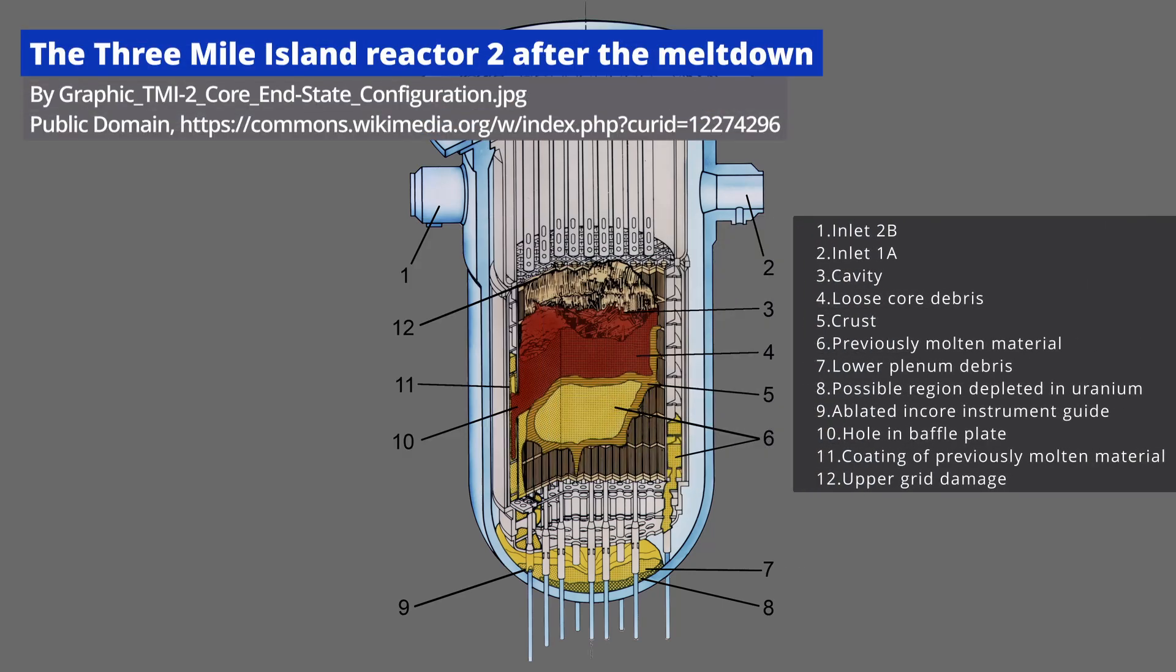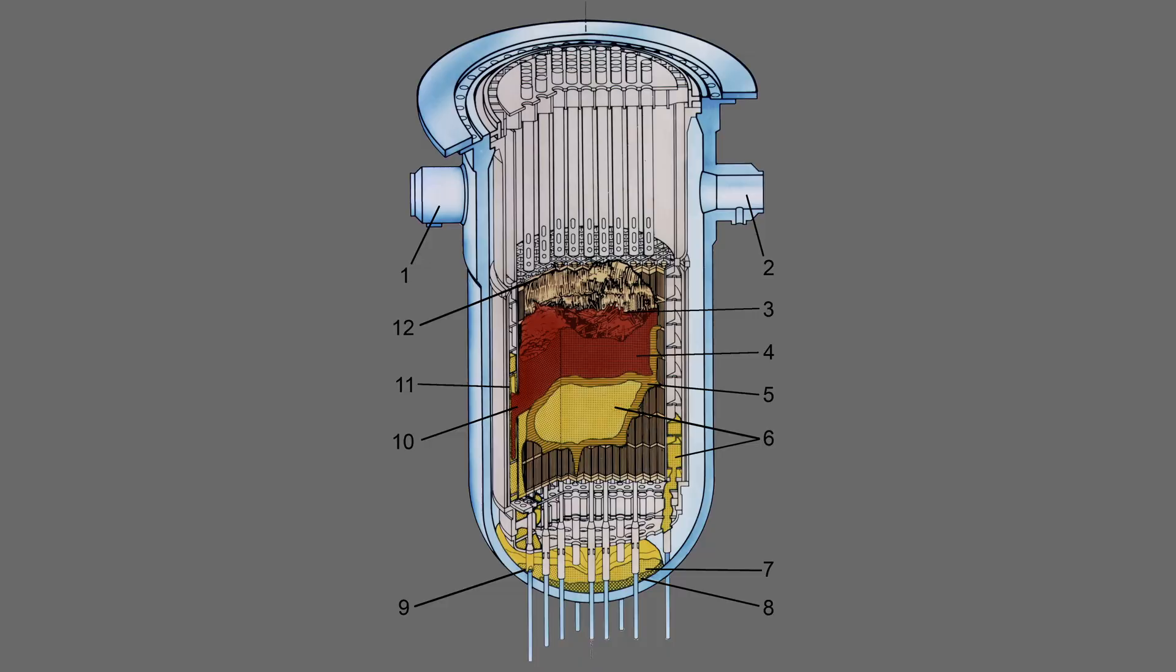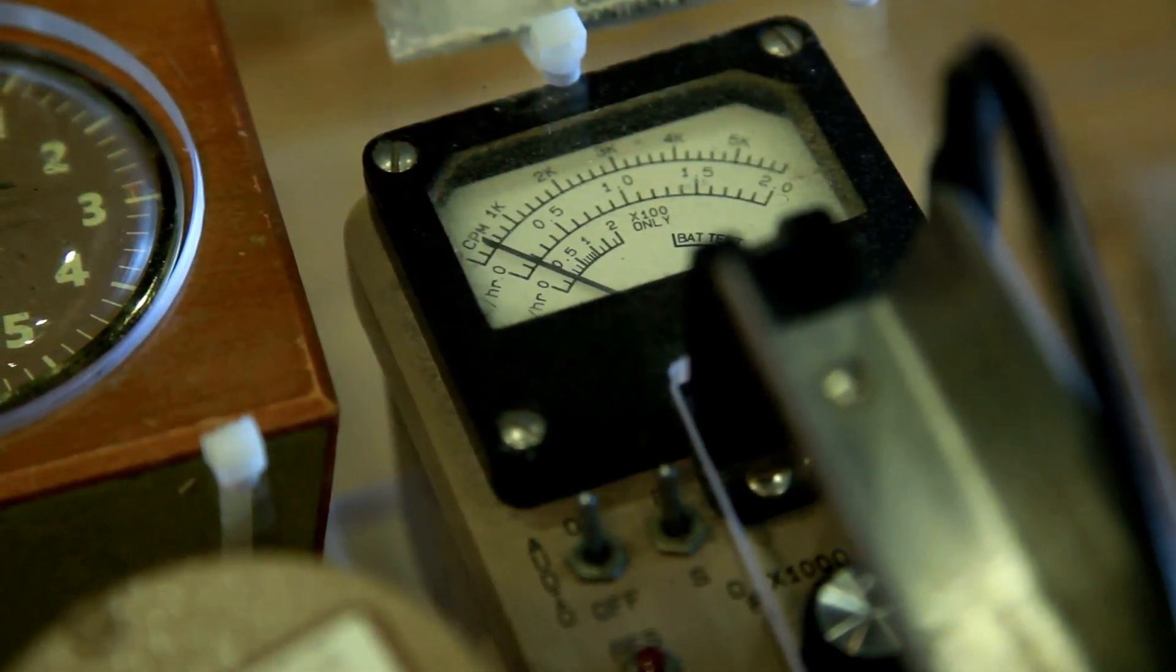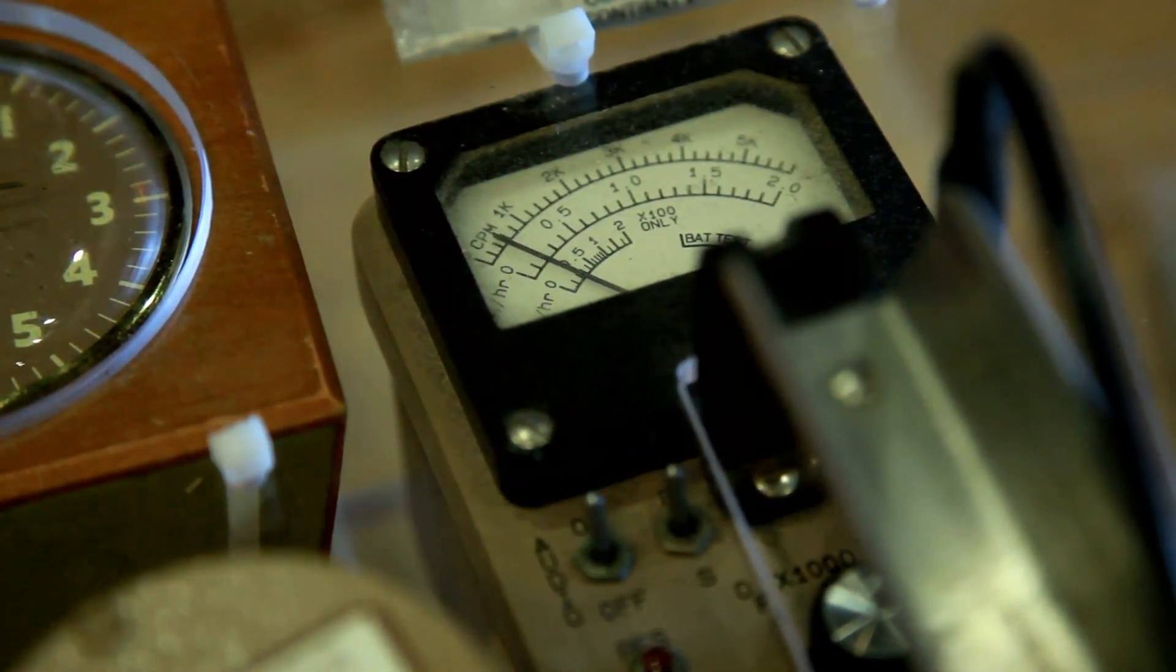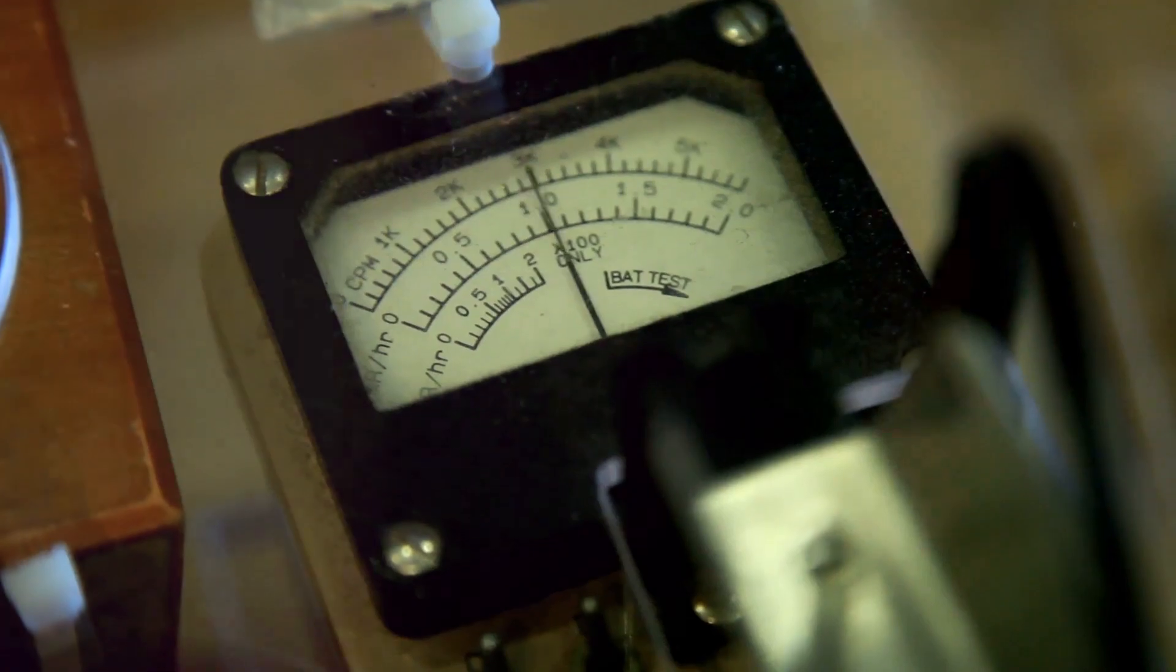In traditional reactors, if the solid uranium fuel rods get too hot, they can melt, causing a catastrophic failure. Because molten salt reactors use liquid fuel and run at much lower pressures, they avoid the risk of a meltdown.